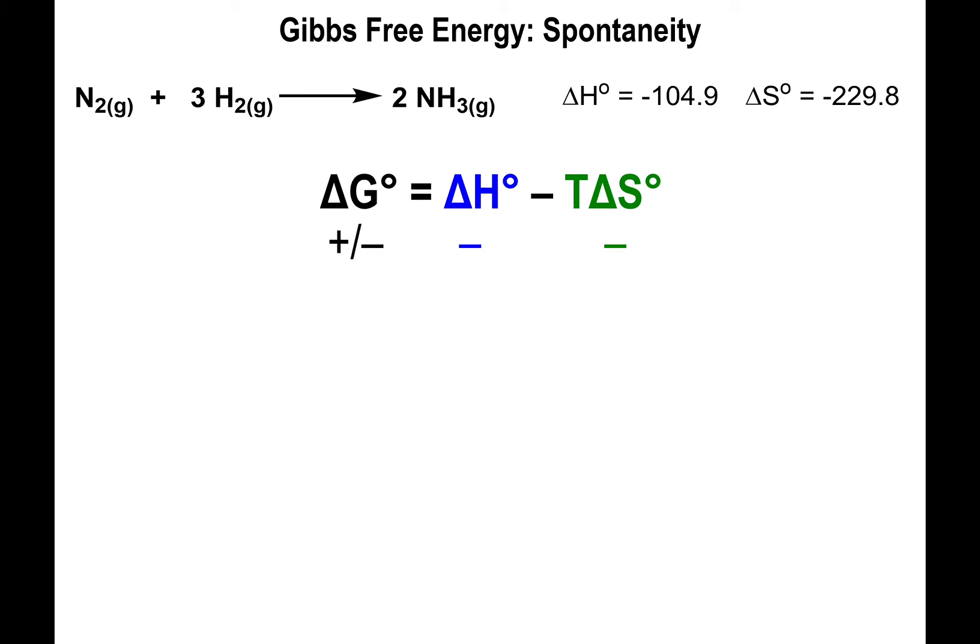If delta G is positive, we have a non-spontaneous process. If it's negative, it's a spontaneous process. Whenever we have the same signs for delta H and delta S, we get into an ambiguous case.